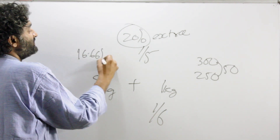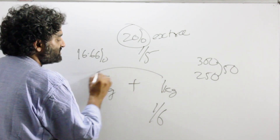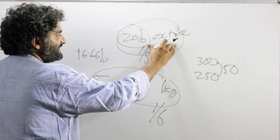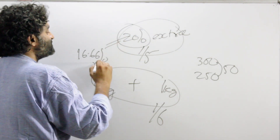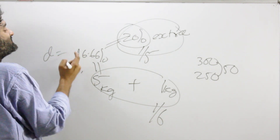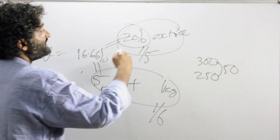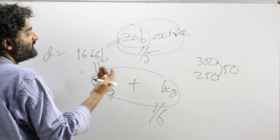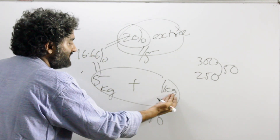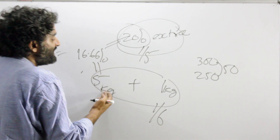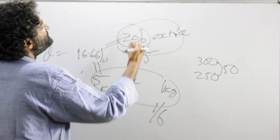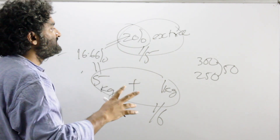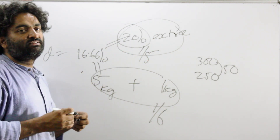This might be confusing, so pay attention carefully. These two situations are the same: both actually mean a discount of 16.66%. '20% extra' means a 16.66% discount. 'Buy five, get one free' means a 16.66% discount. And 'buy five, get one free' also means the same as giving 20% extra. We should look at a couple more examples to get comfortable with this system.